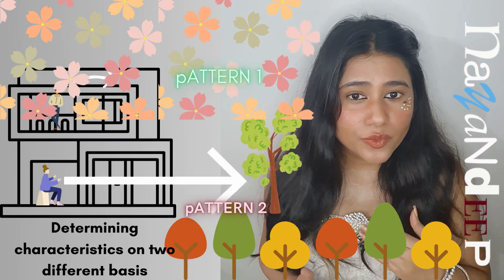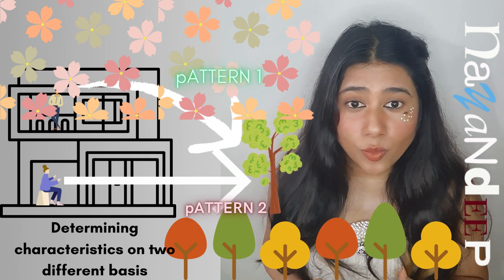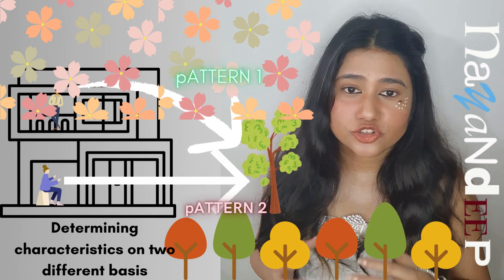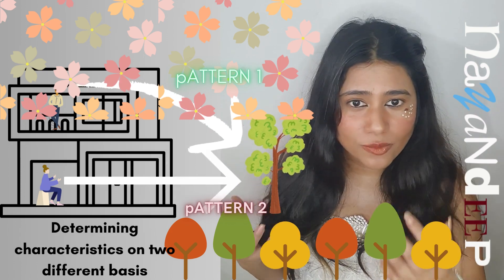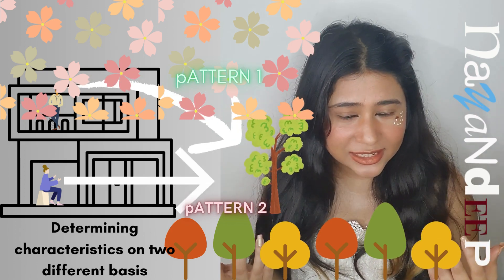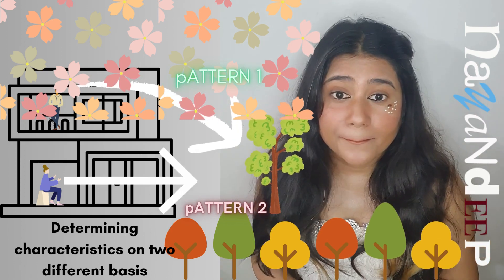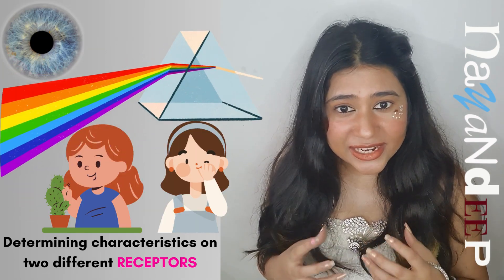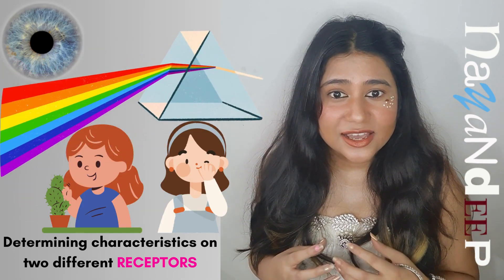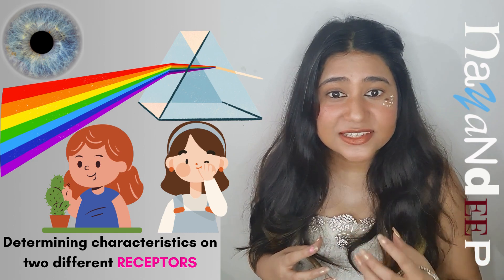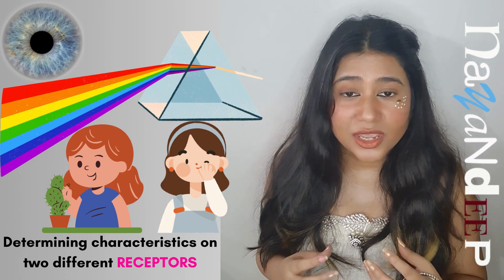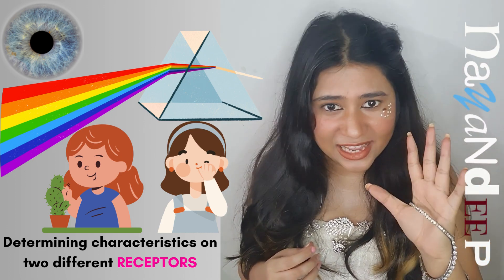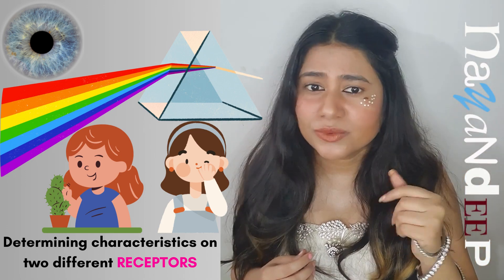Till date, whenever we say the word texture, what comes into our mind is actually pattern — the geometric pattern that is being formed on something that we are looking at. But how is texture defined? How anything is defined with characteristics of texture? It happens due to two receptors, that is eyes and hands, meaning skin.